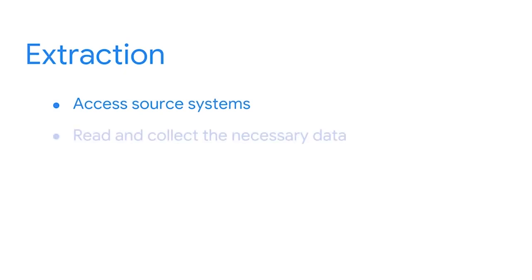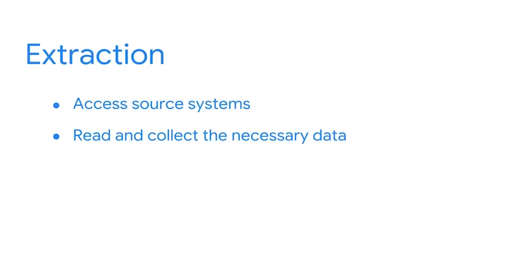In the extraction stage, the pipeline accesses source systems and then reads and collects the necessary data from within them. Many organizations store their data in transactional databases, such as OLTP systems, which are great for logging records. Or maybe the business uses flat files, such as HTML or log files. Either way, ETL makes the data useful for analysis by extracting it from its source and moving it into a temporary staging table.